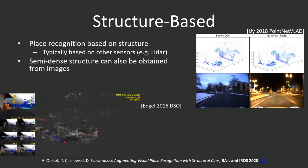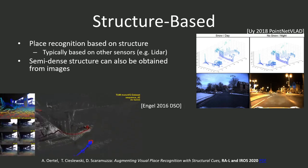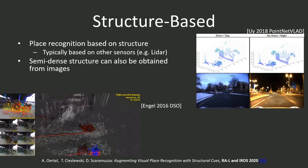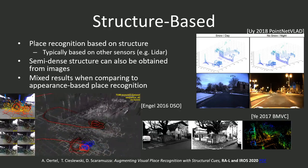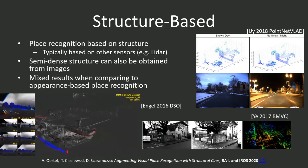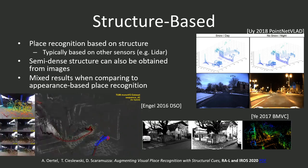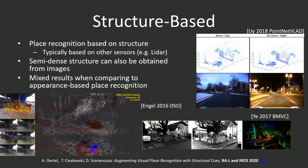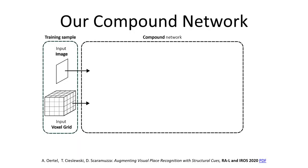In fact, sparse to semi-dense structural information can be obtained from cameras using structure from motion. In previous work, we investigated exploiting such visually obtained structural information for place recognition, but received mixed results when comparing performance to purely appearance-based methods. So in this work, we explore combining the best of both worlds. We propose a new neural network architecture which takes as input both images and voxel grids representing the visual and structural features of the scene.